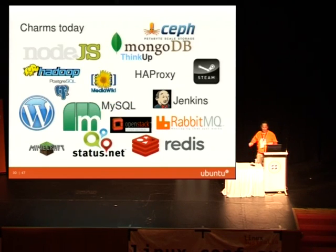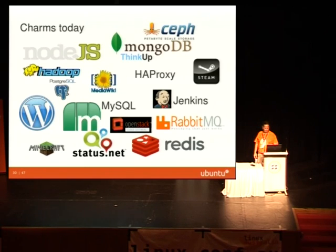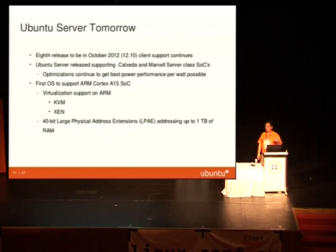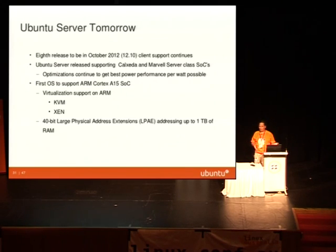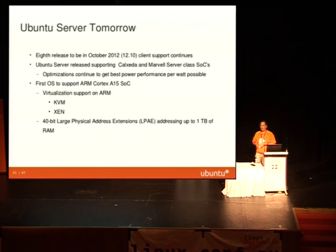Juju uses things called charms to describe how to deploy different apps — there are a bunch of apps that have charms today that you can download and deploy with. Currently we're working with Calxeda on 32-bit servers. In April we expect to do a release that'll have support for them, assuming the hardware is ready in the ARM space — hardware sometimes lags expected delivery dates. But we're looking pretty good for having some amount of support for these 32-bit servers.